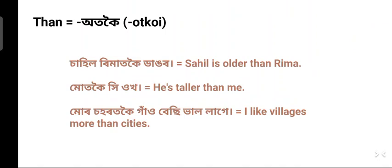Next: 'than' in Assamese — 'তকৈ' (tokoi). Here the locative case ending 'ত' plus 'কৈ' gives the comparative meaning. Example: 'Sahil Rimát koi dangor' — Sahil is older/bigger than Rima. 'Rimát koi' means than Rima, 'dangor' means big/old. Another example: 'Moort koi hi ughko' — he is taller than me. 'Moort koi' means than me, 'hi' means he, 'ughko' means tall.